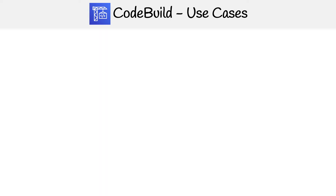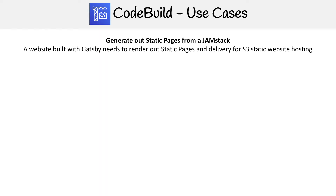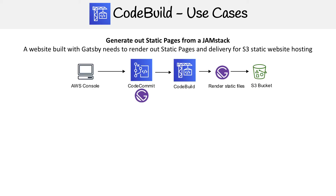Let's look at a couple of use cases for CodeBuild. The first one is generating static pages from a JAMstack app — JAM stands for JavaScript, APIs, and Markup. We have a website built with Gatsby, which is a JAMstack application that needs to render out static pages and deliver them to S3 static website hosting.